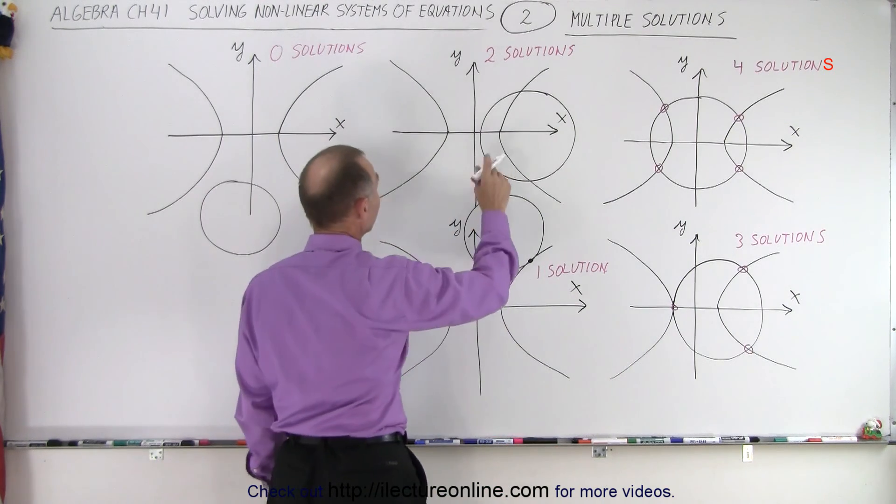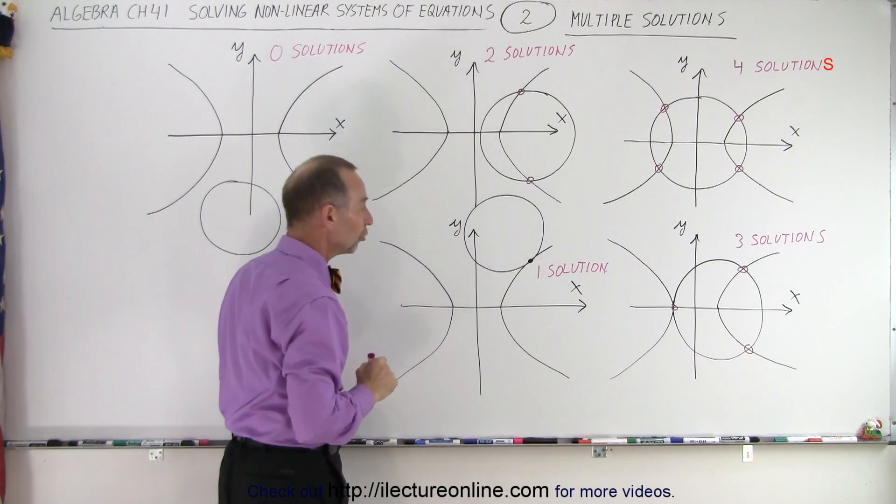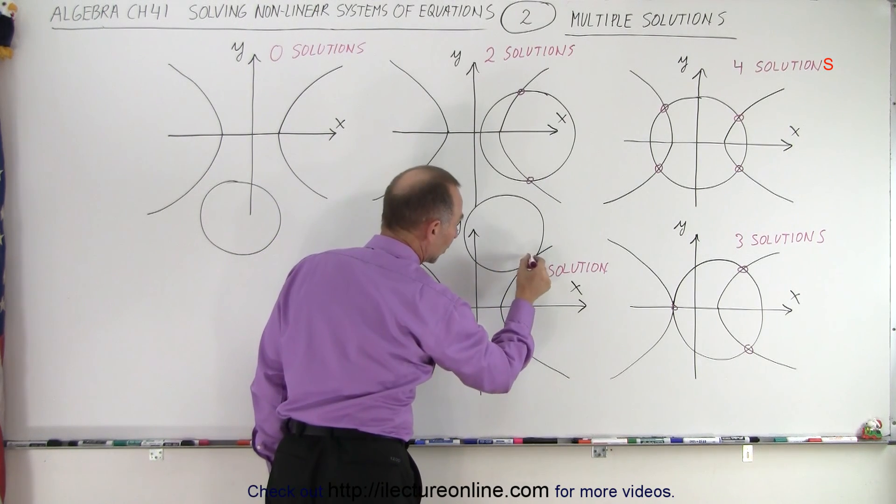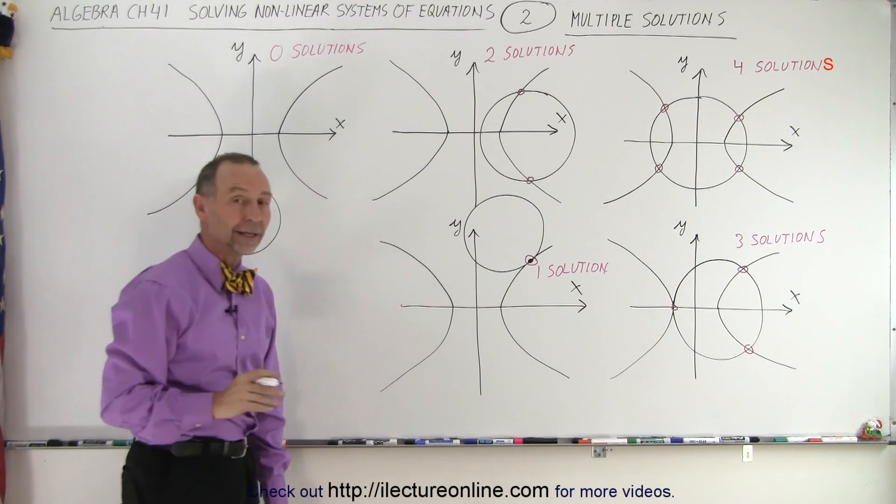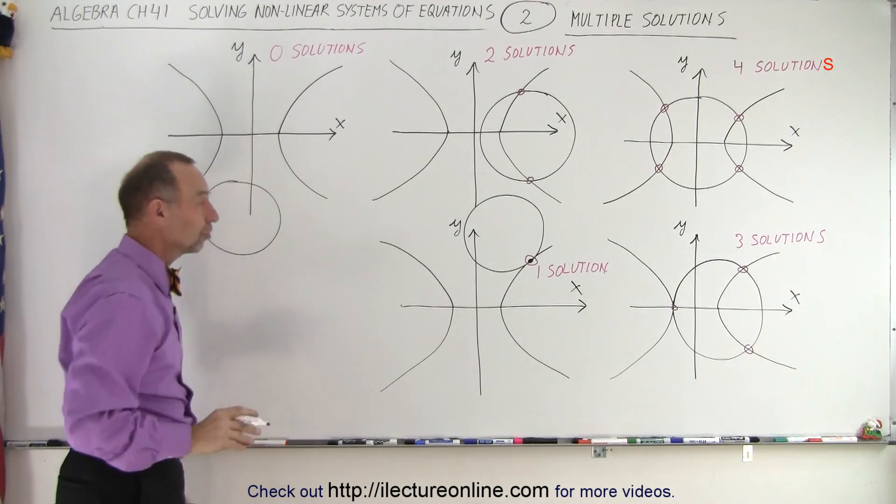Or it could be like this, where there's only two places where the two functions cross, you're looking for two solutions. Or one place where the two just touch together, now there's just one solution. Or it could be like this, and there's no solutions.